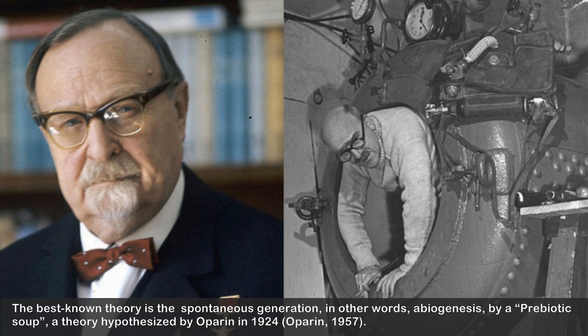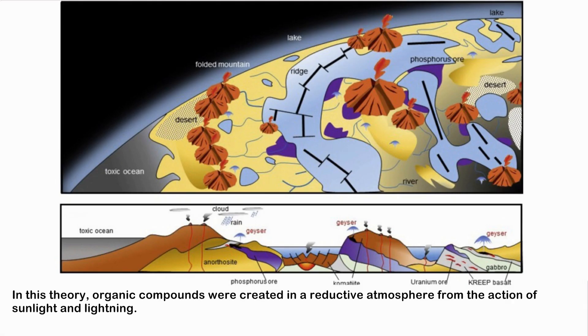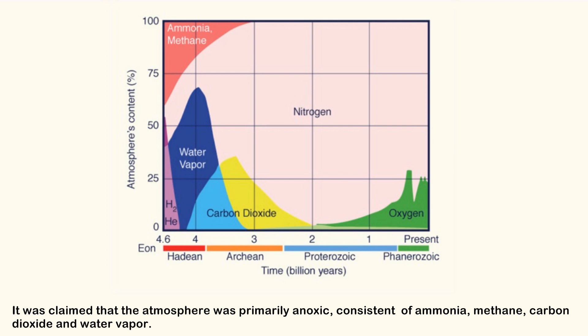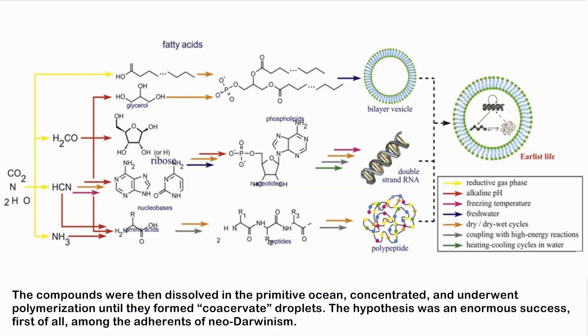This theory was hypothesized by Oparin in 1924. Organic compounds were created in a reductive atmosphere from the action of sunlight and lightning. The atmosphere was claimed to be primarily anoxic, consisting of ammonia, methane, carbon dioxide, and water vapor. The compounds were then dissolved in the primitive ocean, concentrated, and underwent polymerization until they formed co-associated droplets.